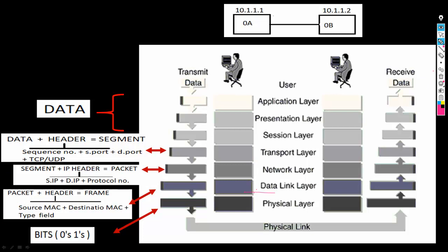The frame will be sent to layer 1, the physical layer, where frames are converted into bits — that is, 0s and 1s. The bits will be transferred to Machine B through a cable to its LAN card at the physical layer.